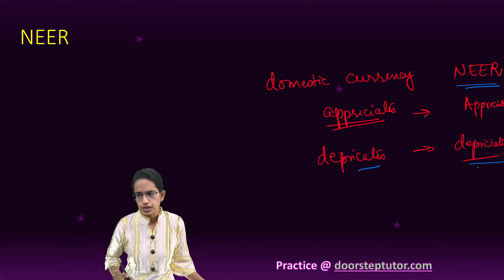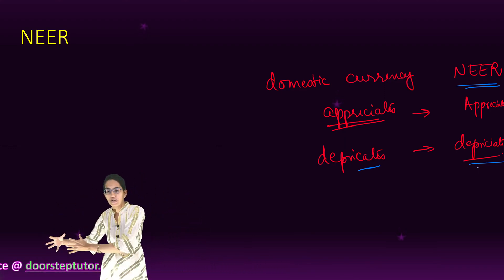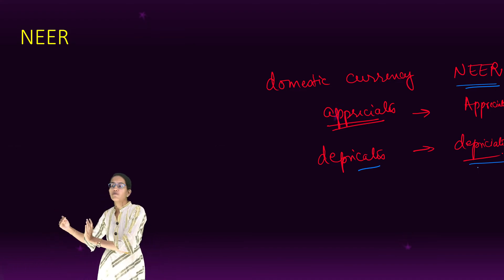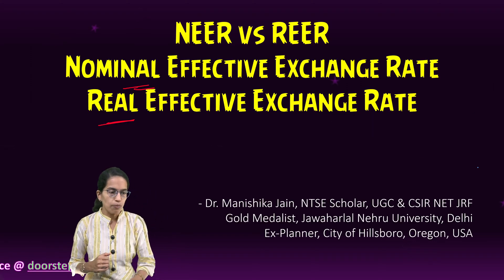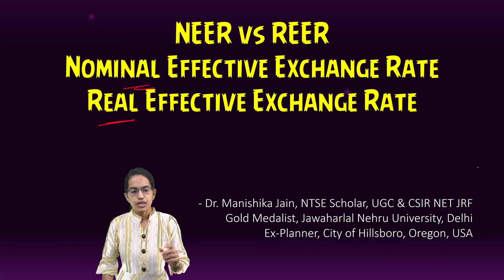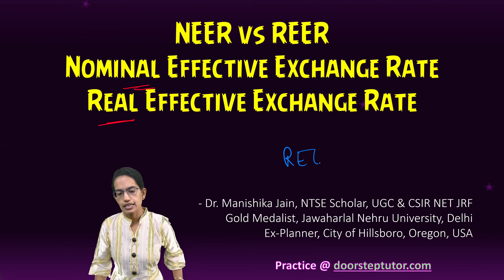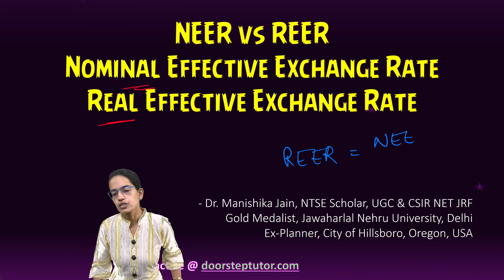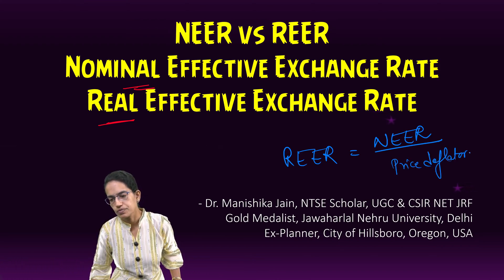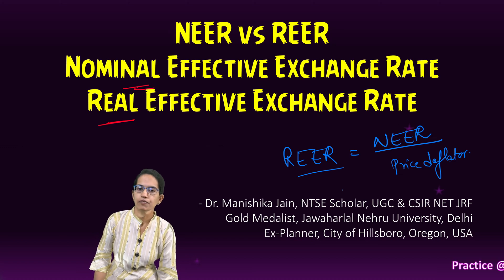This is an extremely important topic in light of trading partners. The key distinction is the proportion of trade with each country: under the real effective exchange rate we account for the proportion of exchange with each country, while for the nominal we only consider the currency exchange. Relating the two: the real effective exchange rate equals the nominal effective exchange rate divided by the price deflator. That relationship is the core basis of this lecture.